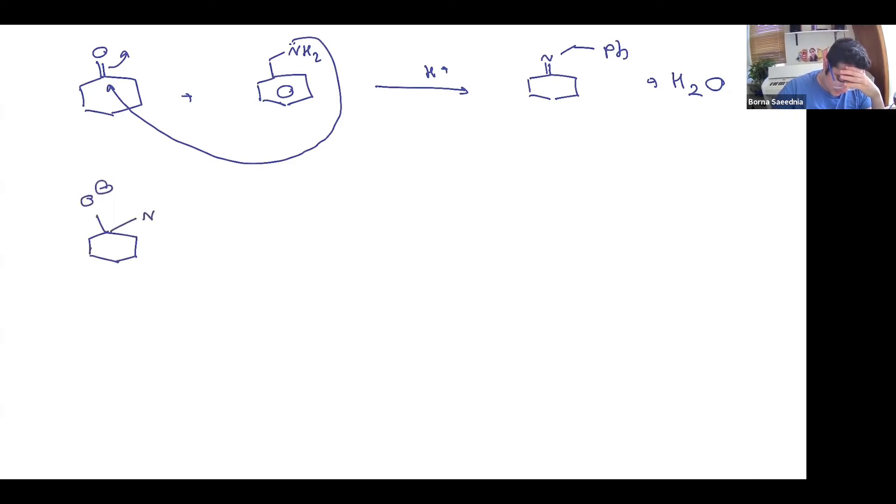And the reason is because, so this is a pretty important point to keep in mind. Generally speaking, an amine would be nucleophilic enough to attack a carbonyl as it is.